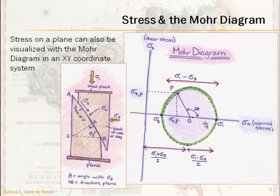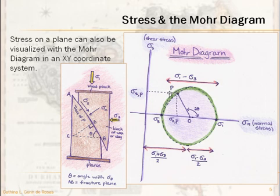We plot sigma 1 here and sigma 3 here — sigma 1 is always greater, always to the right. By plotting those two, you've defined the diameter and radius of the circle, so you draw the circle. Once you have point P plotted, you can immediately read off your sigma shear and your sigma normal for that plane. This axis is your shear axis; this axis is your normal axis. The Mohr diagram is incredibly helpful — once you get used to it, it's actually very quick. Do not be afraid of the Mohr diagram.